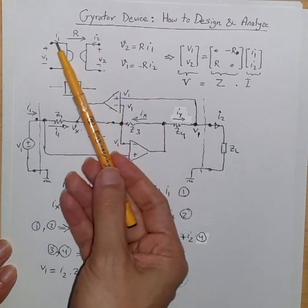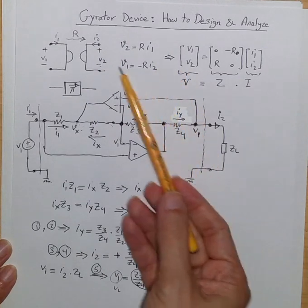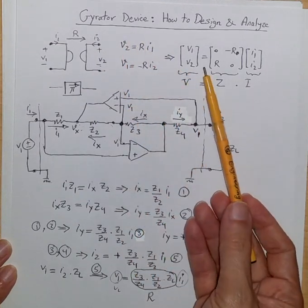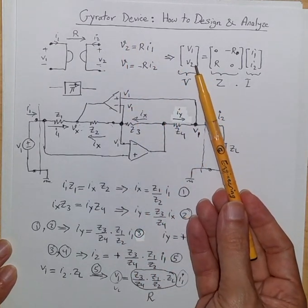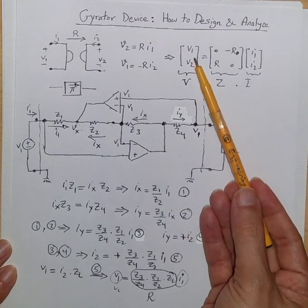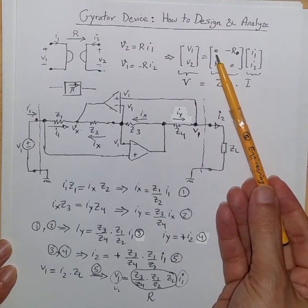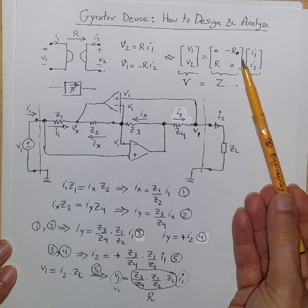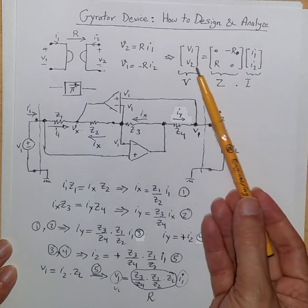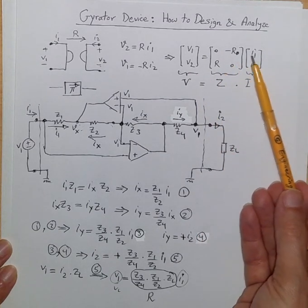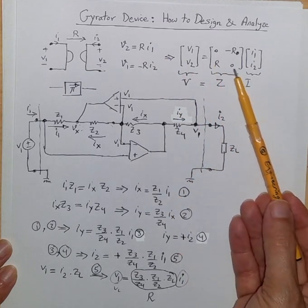Be careful about direction of currents. So we can represent this relationship in a more formal format using matrices like this. V1, V2 is 0 times I1 minus R times I2, and V2 is equal to R times I1 and plus 0 times I2.